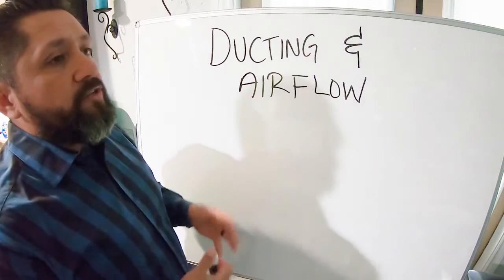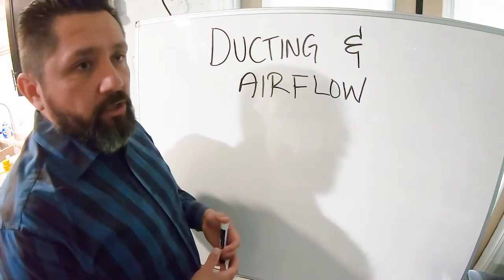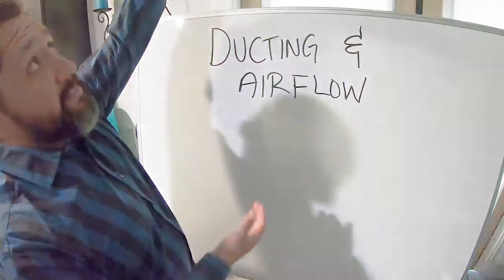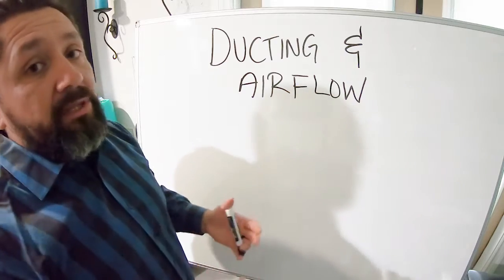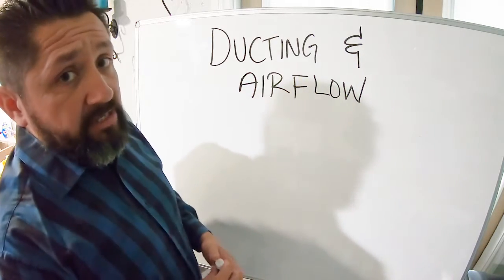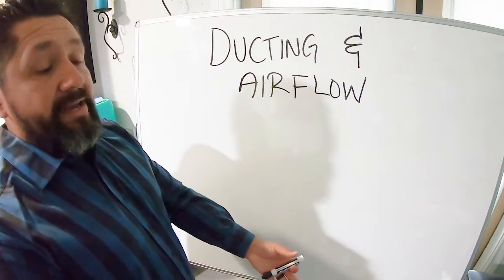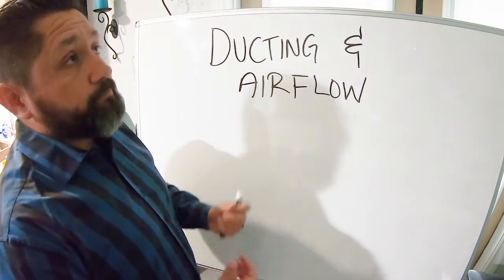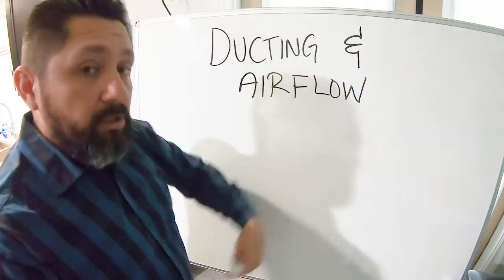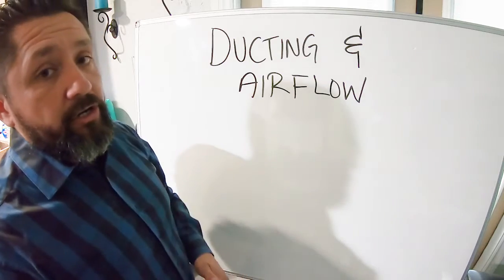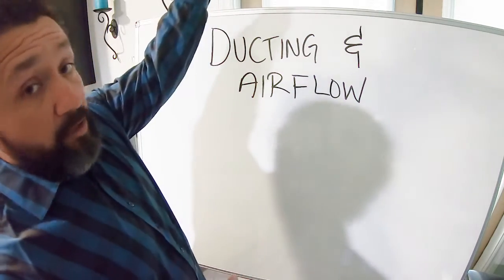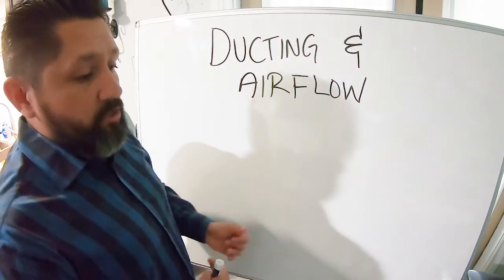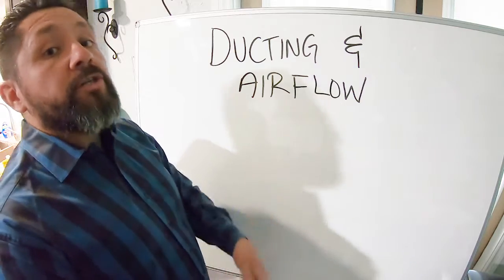That large vent is called a return—it's where all the air returns into the unit. The other vents that are smaller are called your supply. They're the vents that supply the air inside your house. The return is where all the hot air from your house returns into the unit, and those supplies are where the cold air blows out into your house if you're turning on your air conditioner. If you're turning on your heater, the hot air is going to be blowing out of those supplies because it's supplying the house with hot air, and the return is where the cold air returns to turn into hot air.